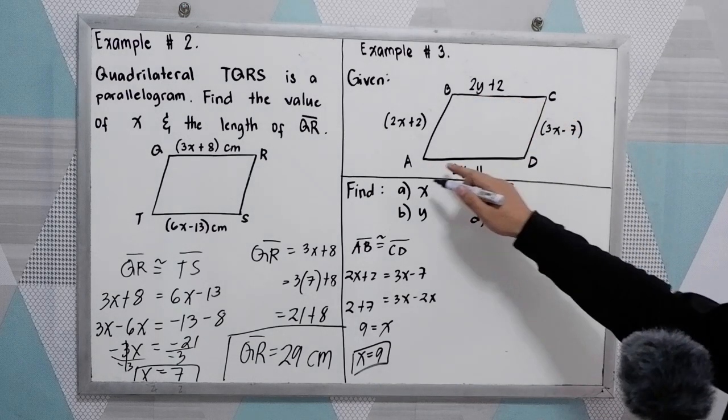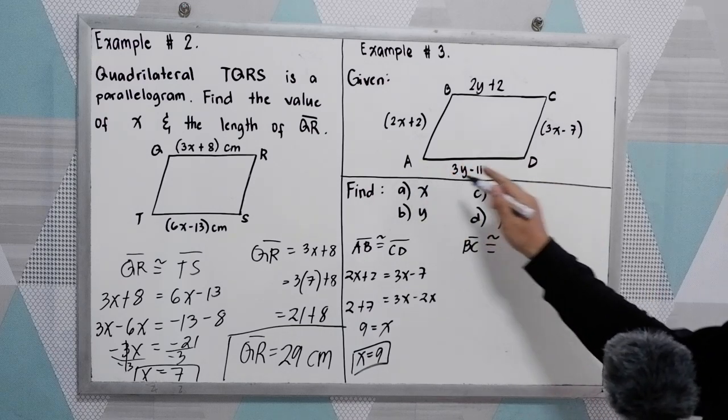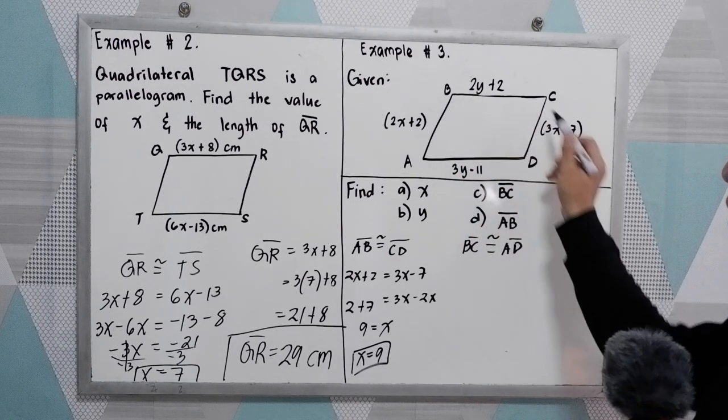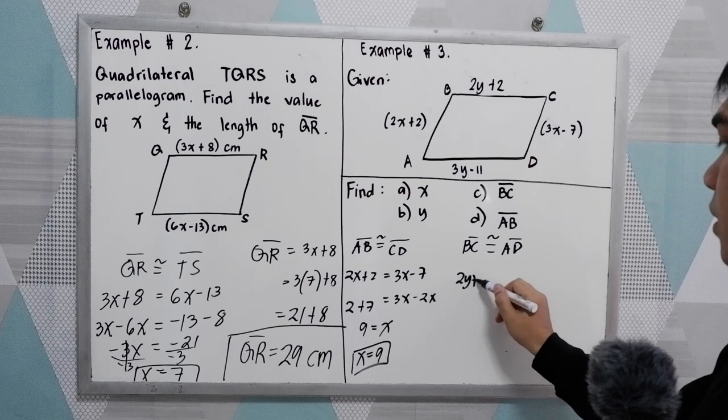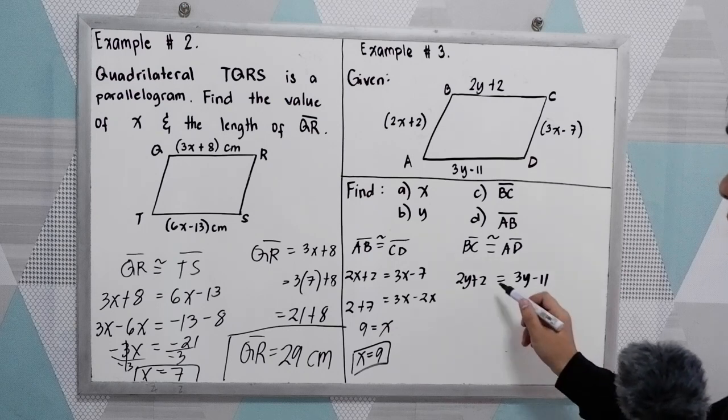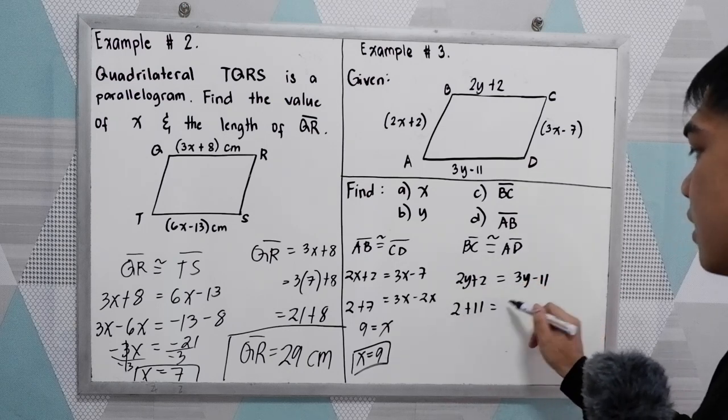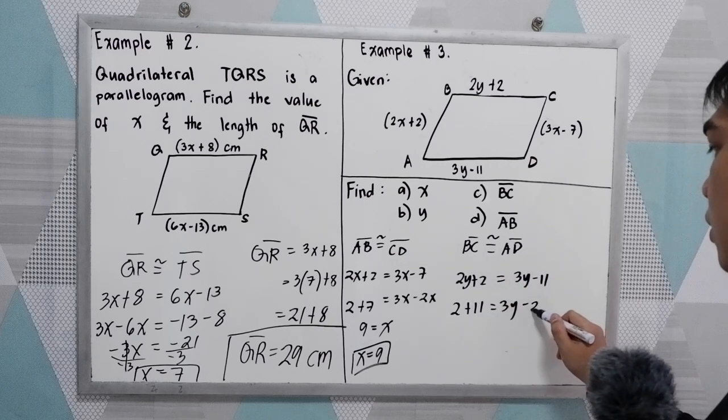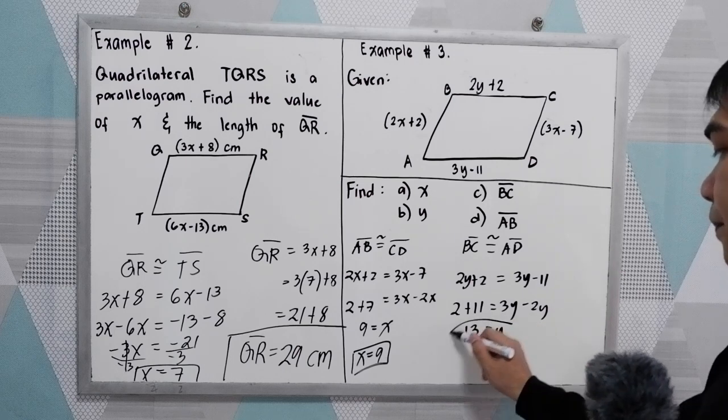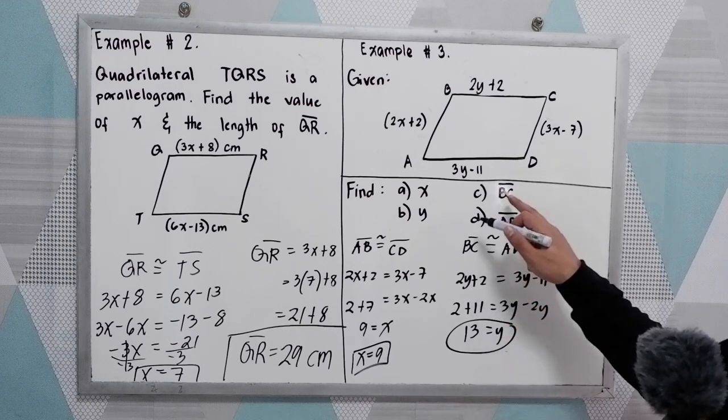So we have the value for x. So we know that BC is congruent to AD. The value of BC is 2y plus 2. That is equal to AD, 3y minus 11. Now again, move positive 11 is equal to 3y minus 2y. 2 plus 11, that is 13 is equal to y. Since we have values for x and y, we can now get BC.